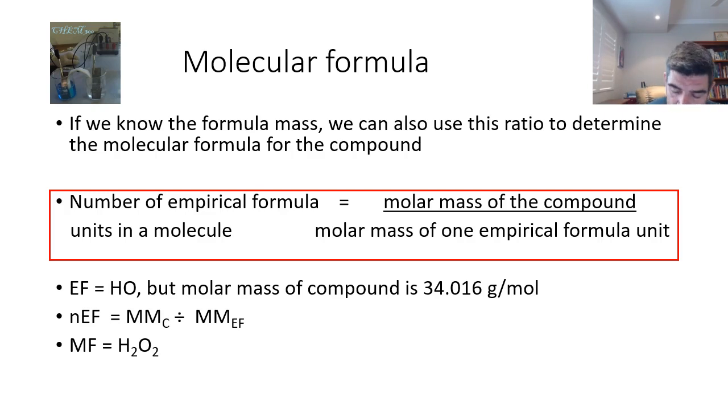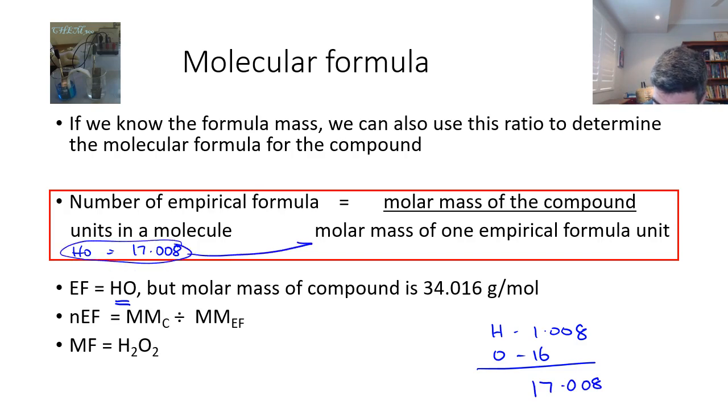So to go back to our original slide, hydrogen peroxide had an empirical formula of HO. Now we know that hydrogen is 1.008 when we look it up on the periodic table, and oxygen is 16. Therefore, 1 empirical formula unit for HO would be equal to 17.008. So that's the total here, 17.008. And of course, that number here is equivalent to the molar mass of one empirical formula unit.